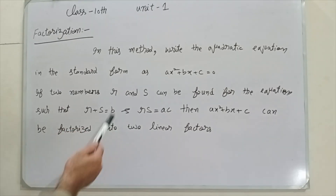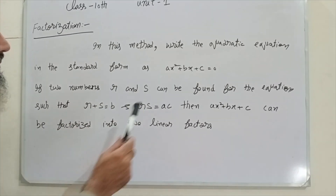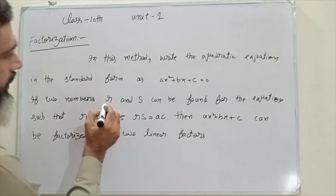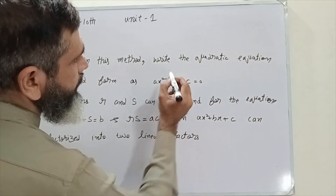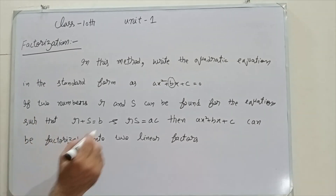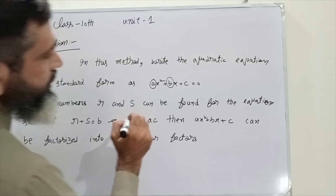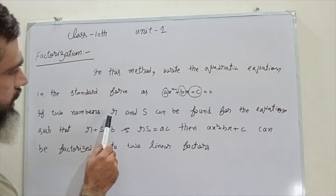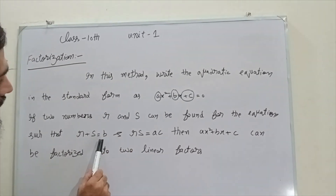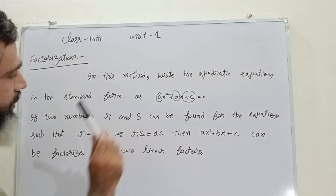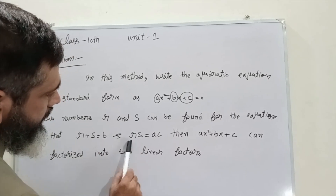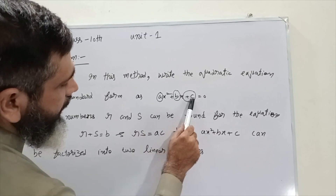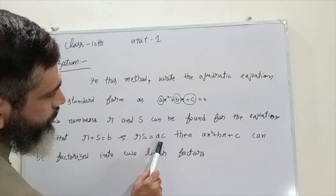If two numbers r and s can be found for this equation such that r plus s is equal to b — the coefficient of x — and r times s is equal to a times c, the product of the coefficient of x² and the constant c, then we can factorize the equation. So rs is equal to ac.